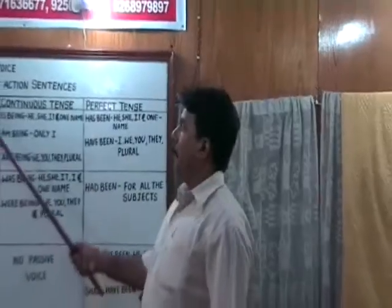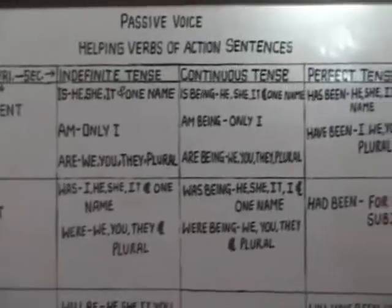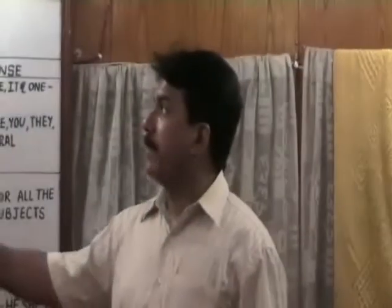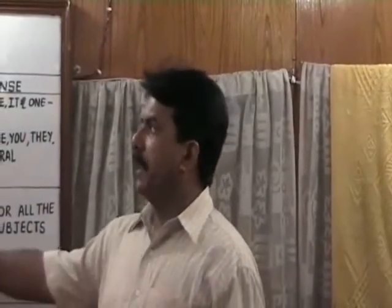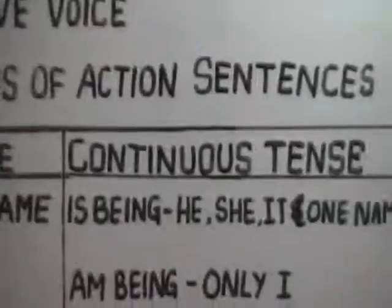This is a helping group chart for passive voice of action sentences. We have passive voice only for eight tenses: present indefinite, present continuous, present perfect, past indefinite, past continuous, past perfect, future indefinite, and future perfect.